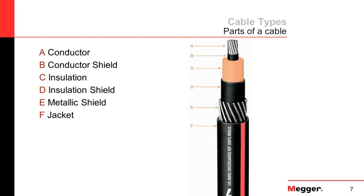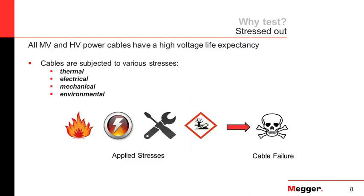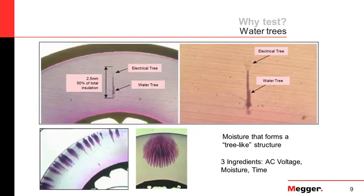Why are we testing cables? Throughout the cable's life, they're subjected to various types of stresses: thermal stresses from short-circuit currents, electrical stresses from transients, mechanical stresses from tight bending radius, and environmental issues like high-moisture areas. All these stresses age and degrade the cable over time, which leads to cable failures. One of the leading aging conditions of medium-voltage cables is something called a water tree — moisture trapped inside the cable that forms a tree-like or bush-like structure. All you need are three ingredients: AC voltage, moisture, and time.